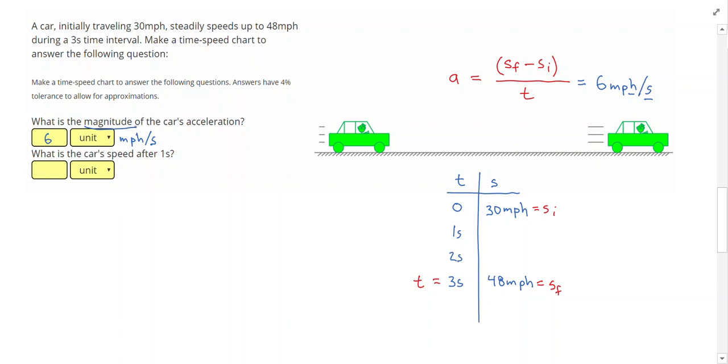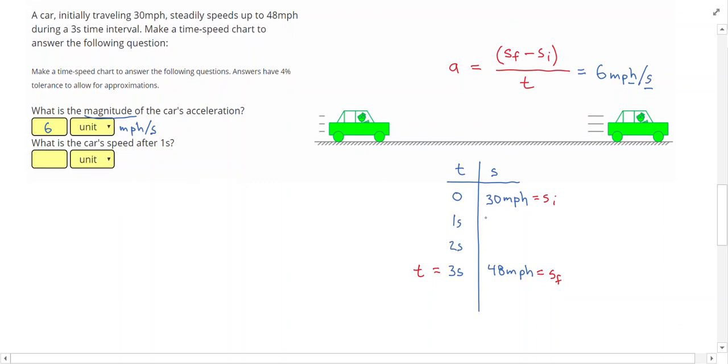Remember, magnitude means putting in a positive number. So no matter what, your answers on here are going to be positive. So now I know the speed is increasing by 6 miles per hour every second. So I can just add 6 and make sure everything works out. So after 1 second, I'm at 36 miles per hour. After 2 seconds, 42 miles per hour. If I added 6 again, I'd get to 48 miles per hour, so I know I'm right. This says what was the car's speed after or at 1 second, which would be 36 miles per hour.